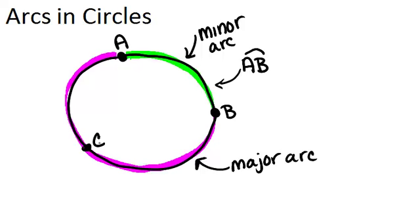So the major arc we would call arc A, C, B. And again, you just put the arc symbol over it. Anytime you're naming a major arc, you always have to use three letters. Otherwise, people will assume that you're talking about the smaller minor arc.